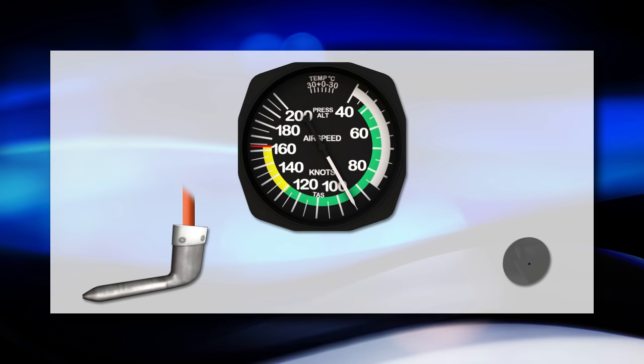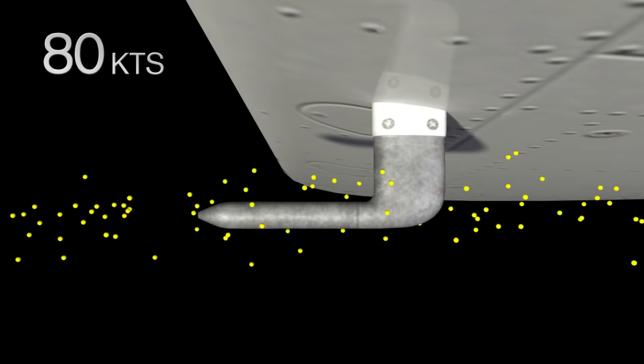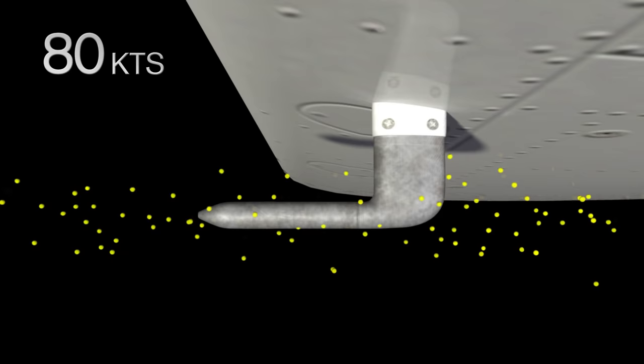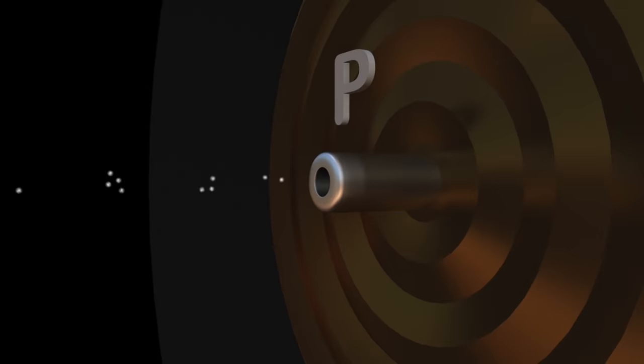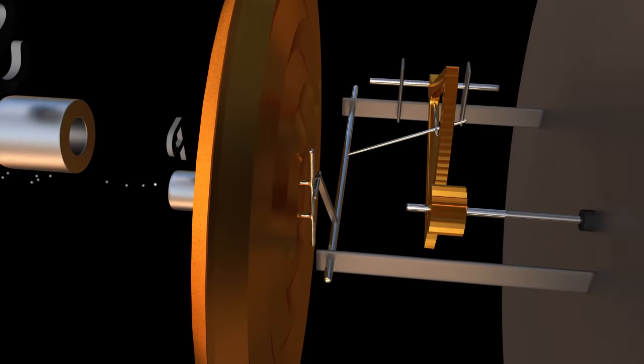The airspeed indicator is the only pitostatic instrument that uses both input from the static port and the pitot tube. The pitot tube is used to measure what's called ram pressure. The faster the airplane travels, the greater the ram pressure is. The ram air entering the pitot tube gets sent to the airspeed indicator and, similar to before, goes into a diaphragm. The greater the pressure, the more the diaphragm expands, so the diaphragm will expand as the airspeed increases.